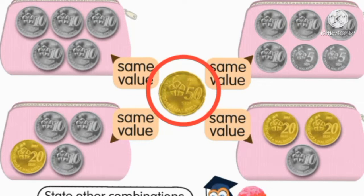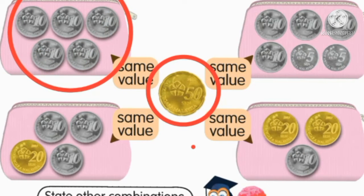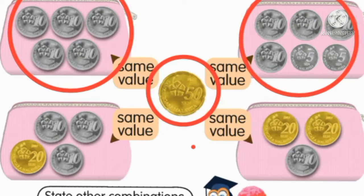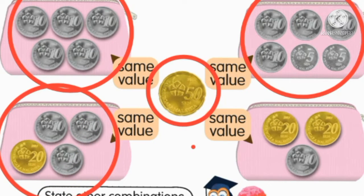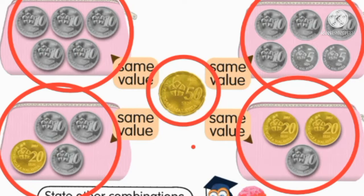Let's have a look. What is the combination to get 50 cents? Here we have five 10 cents. Here we have four 10 cents and two 5 cents. Here we have one 20 cent and three 10 cents. Here we have two 20 cents and one 10 cent.